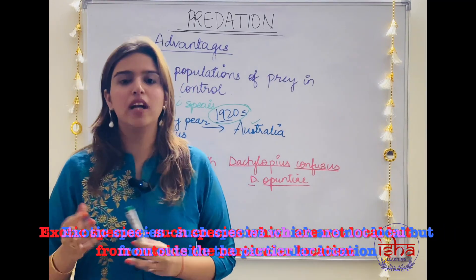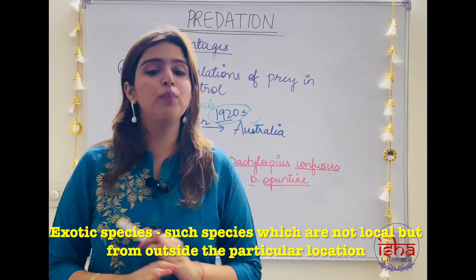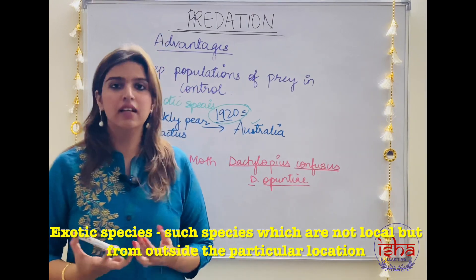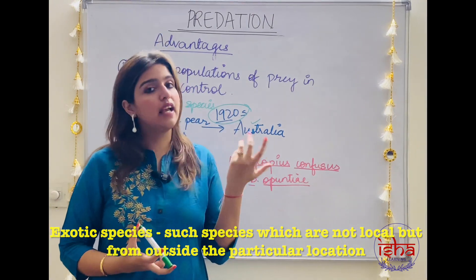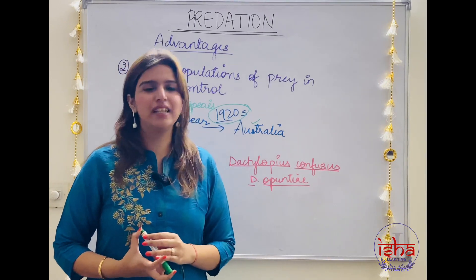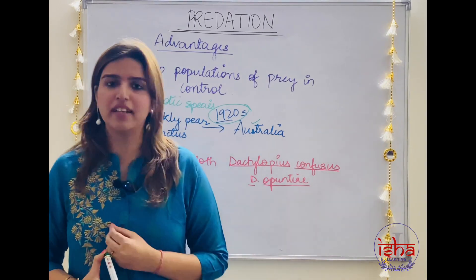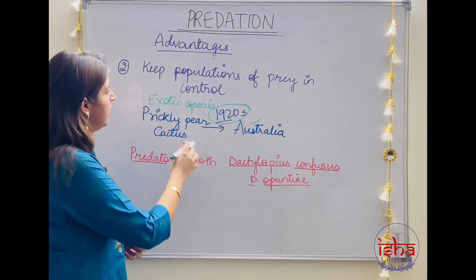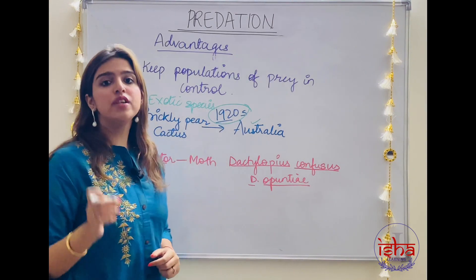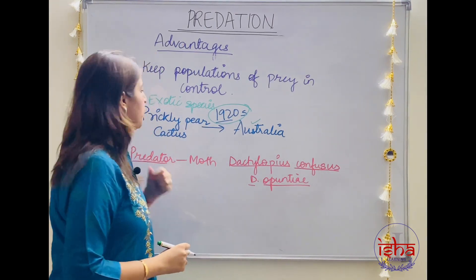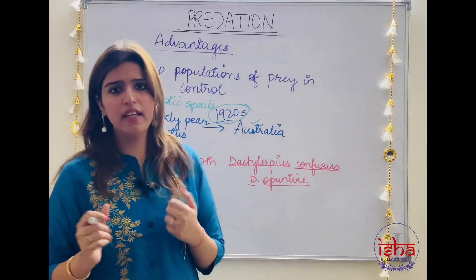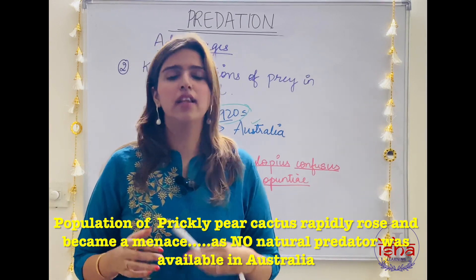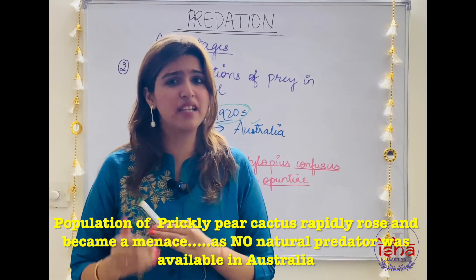For example, dragon fruit was not naturally found in India — it was exotic, coming from outside. Even potato is exotic — it's worth thinking about where potato originally came from. Anyway, this exotic prickly pear cactus was introduced in Australia. Naturally, it had no predator there, so its population rapidly rose and spread very quickly to millions of hectares.